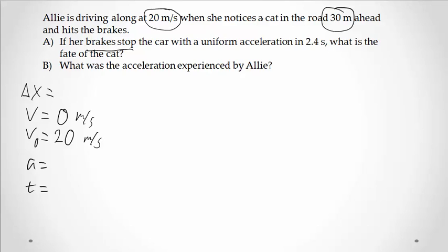We have that the cat is 30 meters ahead in the road. Now, we might be tempted to put 30 meters here for our displacement, but that would be a bad idea. This is how far the cat is. We don't know if the car makes it to 30 meters or not. 2.4 seconds, that is our time.